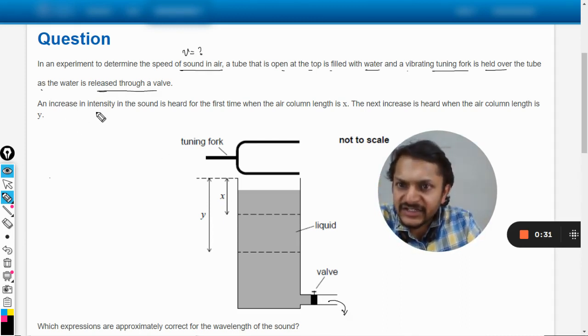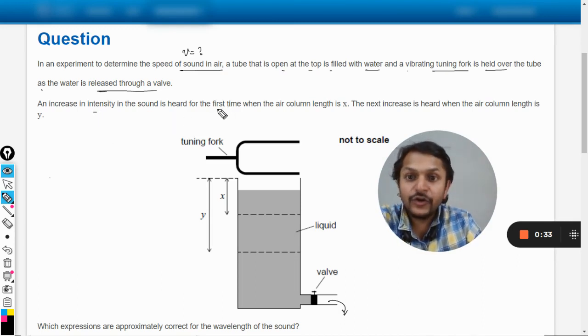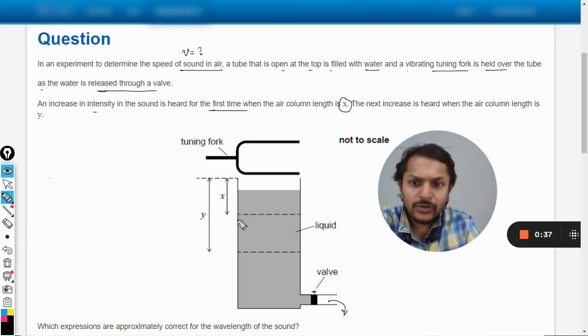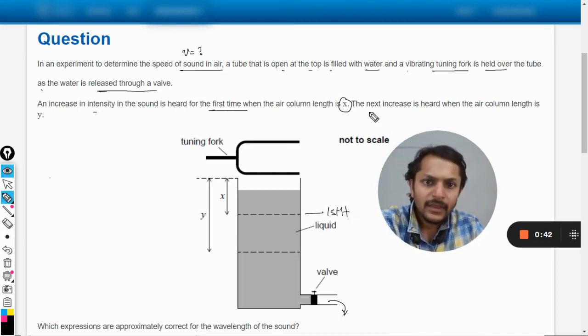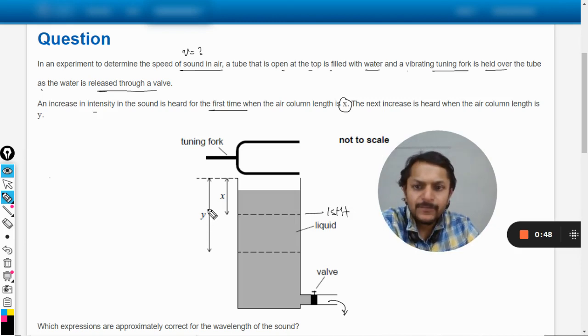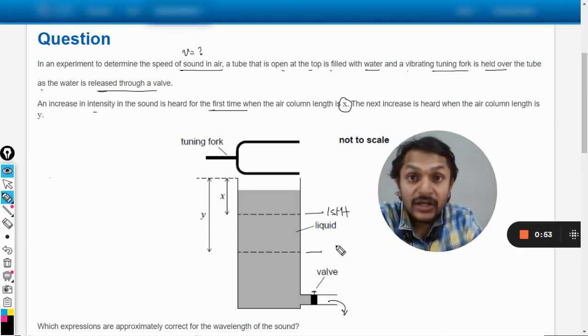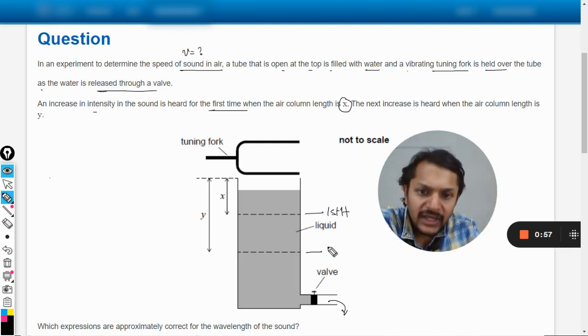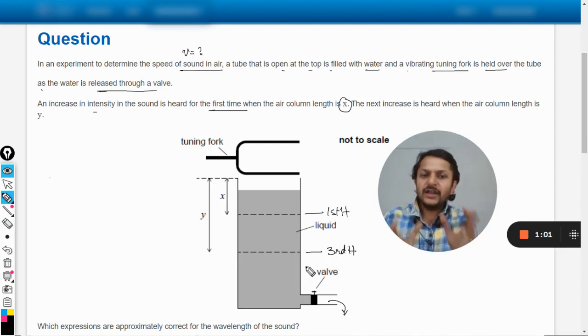An increase in intensity of the sound is heard for the first time when the air column length is x. So if it is the first time, this should be the first harmonic. The next increase is heard when the air column length is y, so this becomes the next harmonic. What is the next harmonic when we are considering one end closed and one end open? It is third harmonic, not the second harmonic.